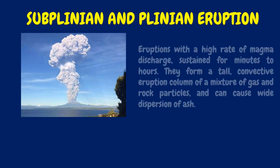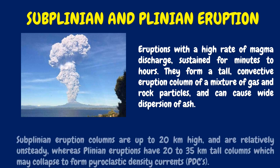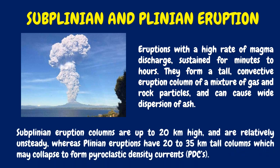Sub-Plinian and Plinian eruptions have a high rate of magma discharge sustained for minutes to hours. They form a tall convective eruption column of a mixture of gas and rock particles and can cause wide dispersion of ash. Sub-Plinian eruption columns are up to 20 km high and relatively unsteady, whereas Plinian eruptions have 20 to 35 km tall columns, which may collapse to form pyroclastic density currents (PDCs).